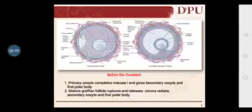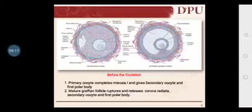Before rupturing of the mature Graafian follicle, the secondary oocyte enters meiosis 2. Meiosis 2 has four phases: prophase 2, metaphase 2, anaphase 2, and telophase 2. Prophase 2 and metaphase 2 are completed before rupture. Then the mature Graafian follicle ruptures and releases the secondary oocyte, first polar body, and corona radiata into the pelvic cavity — this is called ovulation.